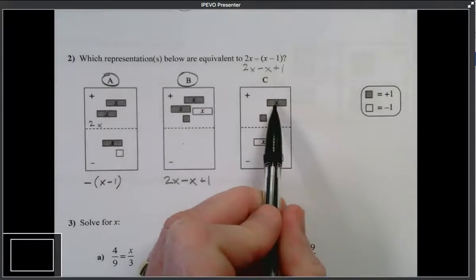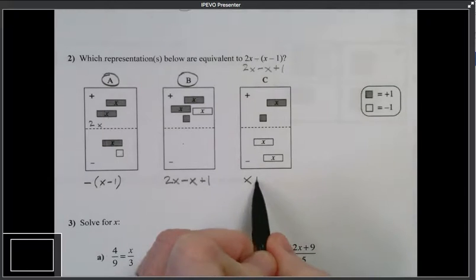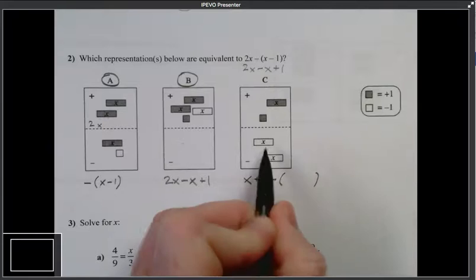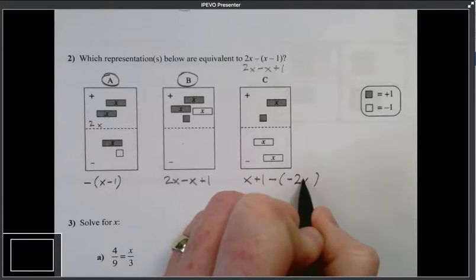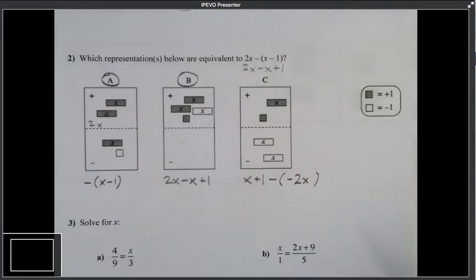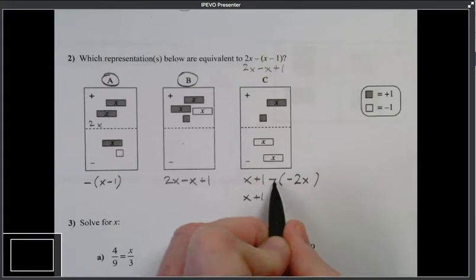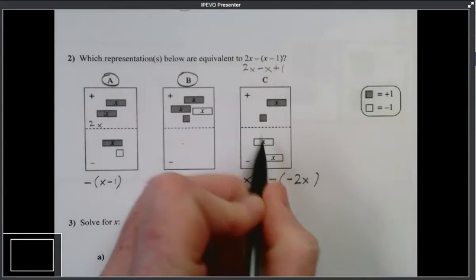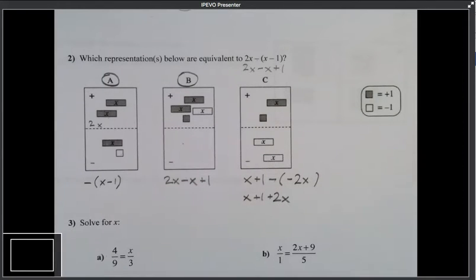Here, I have a positive x, a positive 1. Down below, in the opposite region, I have negative 2x, two negative x tiles. So if I simplify this, I have x plus 1. And I have the opposite of negative 2x. So if I move these up here, they would flip. Hmm, that doesn't seem to be equivalent.